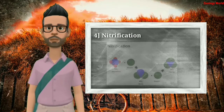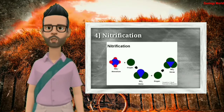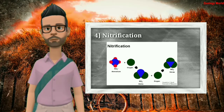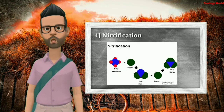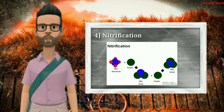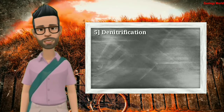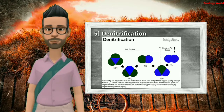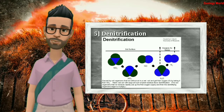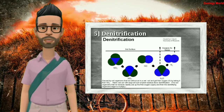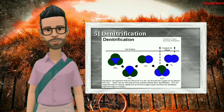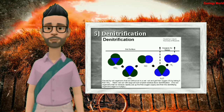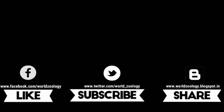Nitrification is the conversion of ammonia into nitrate. For example, nitrifying bacteria convert ammonium ions into nitrate. In denitrification, free-living denitrifying bacteria such as Pseudomonas reduce nitrate ions in the soil into gaseous nitrogen, which returns to the atmosphere.